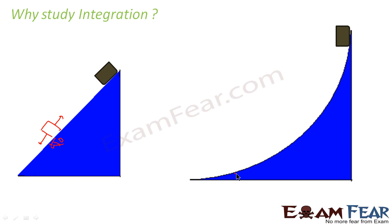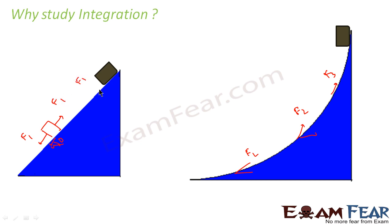But in this case — the curved slope — the angle is changing; it is increasing. So the force required at different points will be F1, F2, F3 — all different. In the plain slope case, at all points you require only F1 force, so finding the total force is easy because you can just sum up. But in the curved case it is difficult.